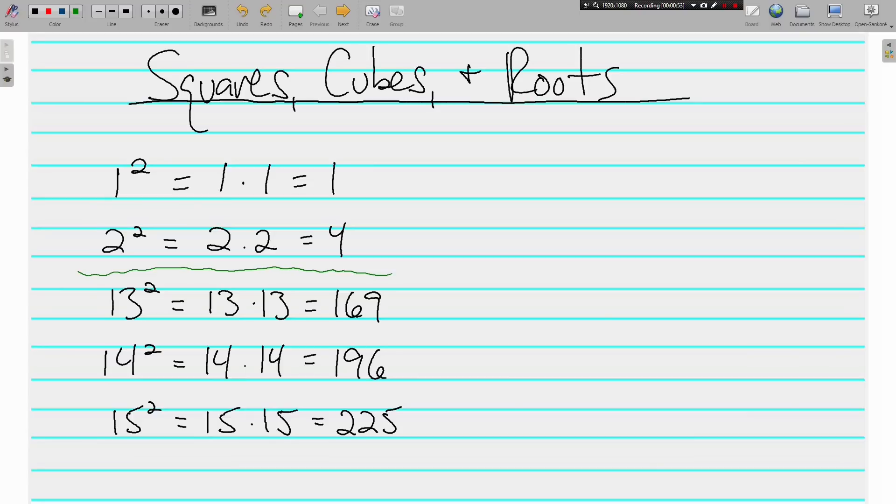Now, I've written down 13 squared, 14 squared, and 15 squared, because I want to make sure that you memorize three more numbers. I know you already know 12 squared, 12 times 12 is 144, but I'd like you to go ahead and memorize three more numbers, please. 13 squared is 169, 14 squared is 196, and 15 squared is 225.